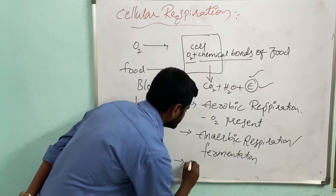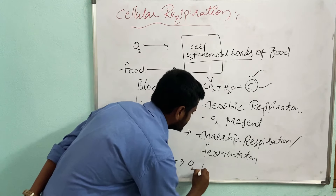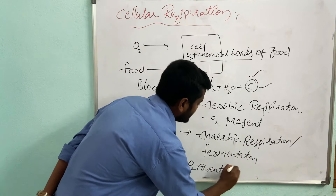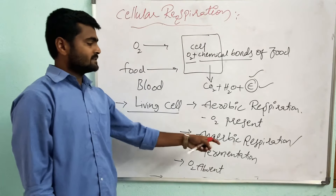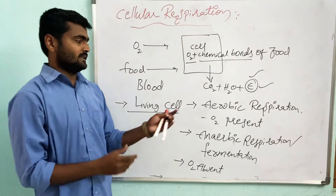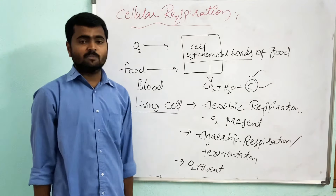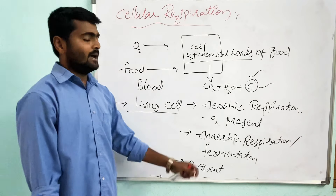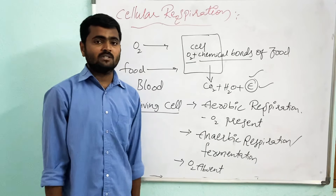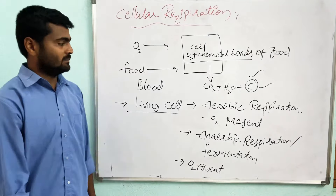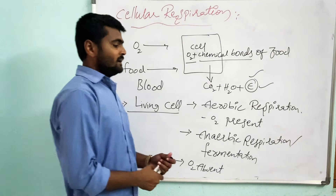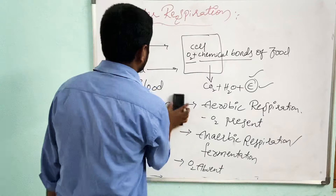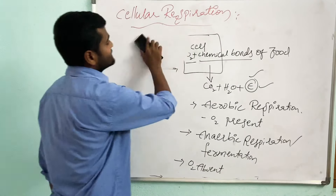In fermentation, oxygen is absent. Energy is released in both cases, but in aerobic respiration a very large amount of energy is released, whereas in anaerobic respiration only a very small amount of energy is released. This cellular respiration takes place in the entire cytoplasm in very low-level organisms like bacteria and yeast.